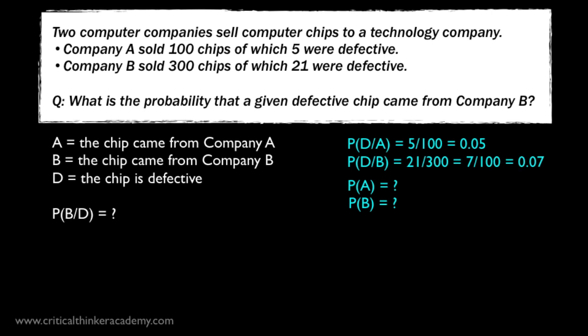Now we're also going to need the unconditional probabilities for A and B. The prior probabilities, before taking into account the new information that the chip is defective. In this case, the prior probabilities aren't 50-50, they aren't distributed equally across the alternatives.